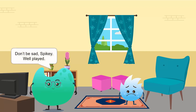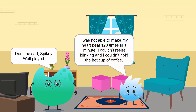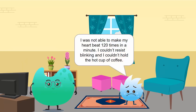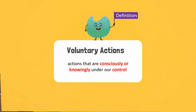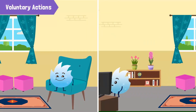Don't be sad, Spiky. Well played. Not really. I was not able to make my heart beat 120 times in a minute. I couldn't resist blinking and I couldn't hold the hot cup of coffee. It's okay, Spiky. You cannot control every action. The actions that you were consciously or knowingly able to do were under your control. These are called voluntary actions, such as sitting and running.